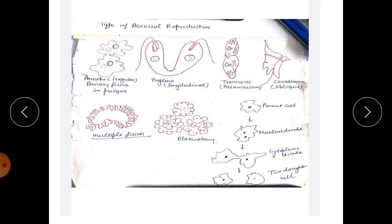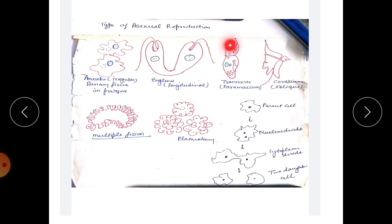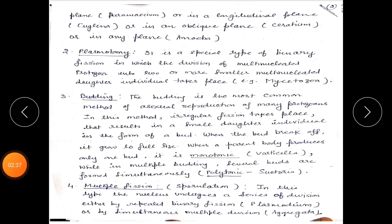In amoeba, binary fission takes place in any plane. In Euglena, longitudinal binary fission takes place. In Paramecium, transverse binary fission takes place, and in Ceratium, oblique binary fission takes place. Plasmotomy is a special type of binary fission in which the division of multinucleate protozoa into two or more smaller multinucleated daughter individuals takes place, occurring in Mycetozoa.